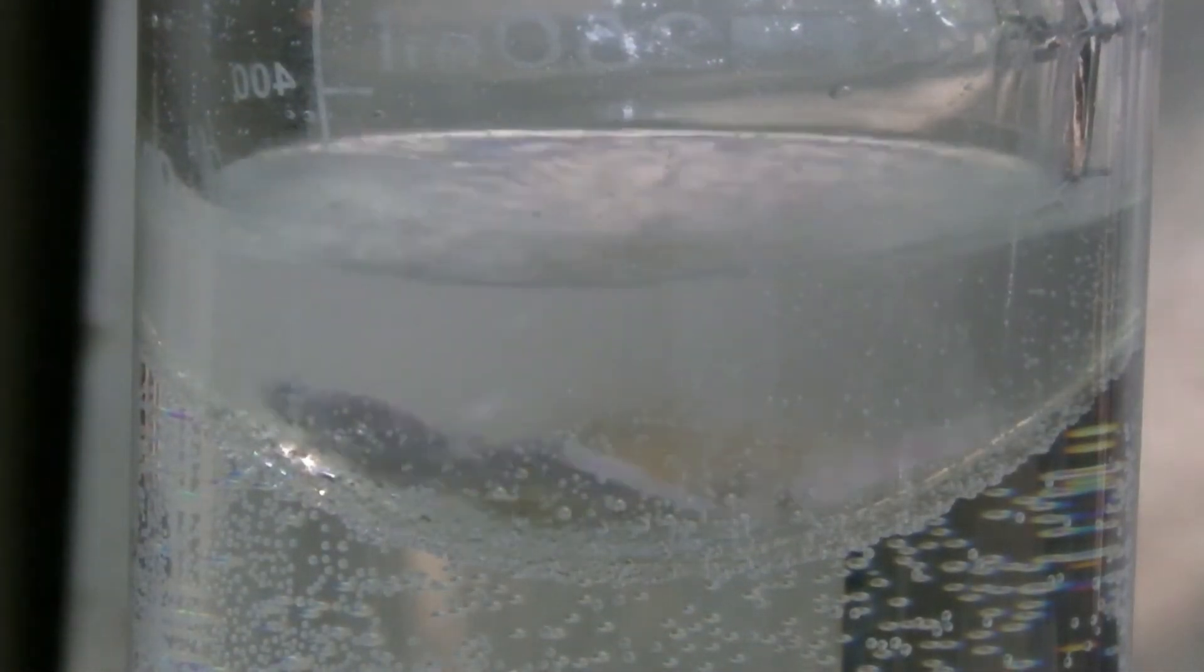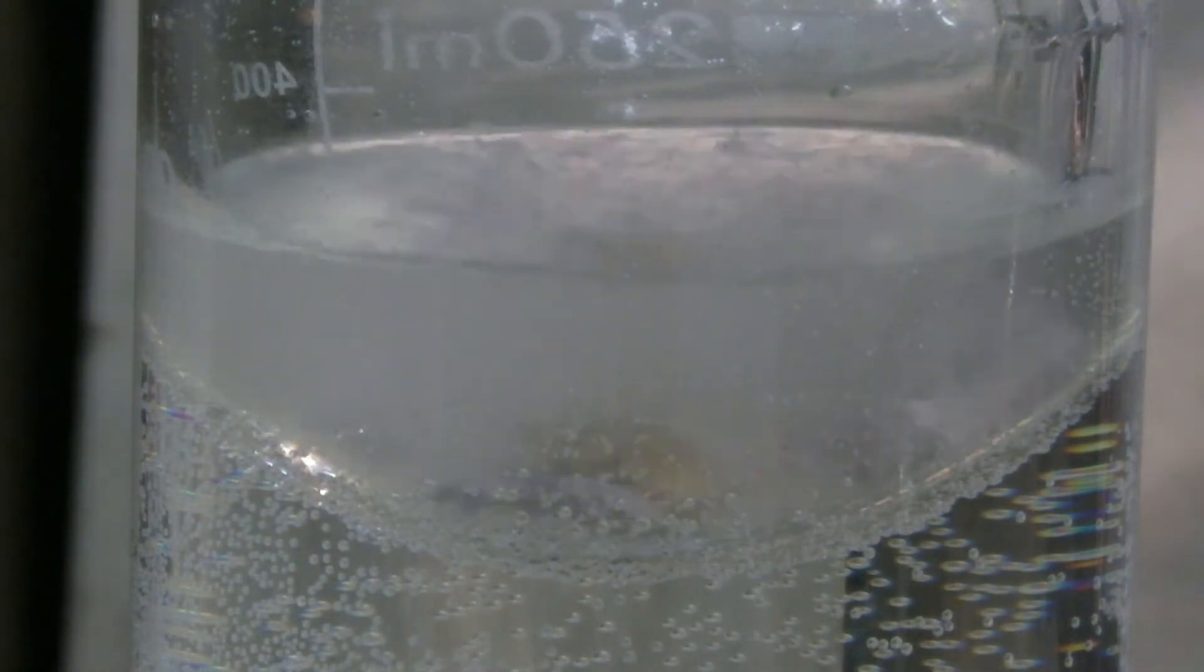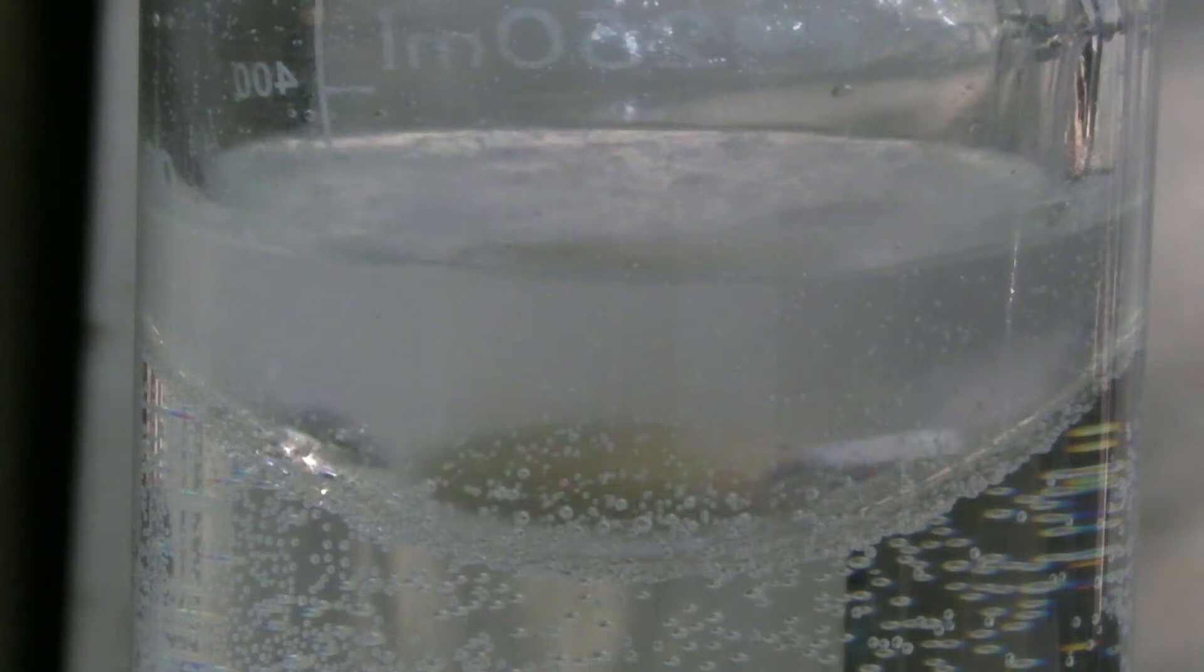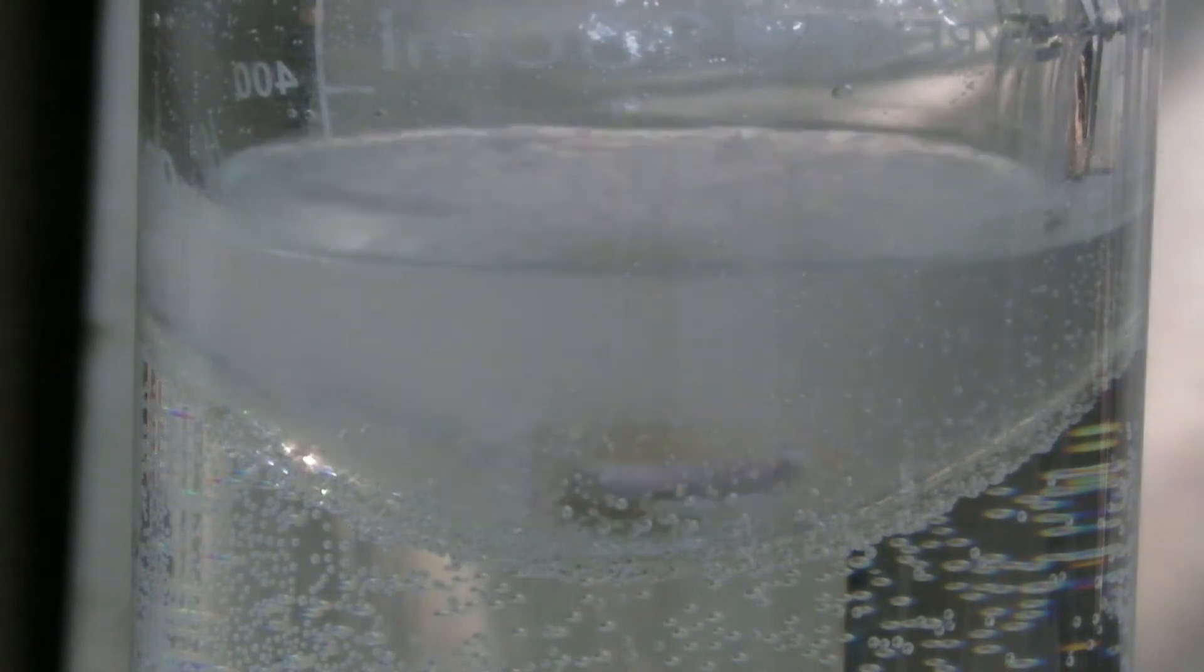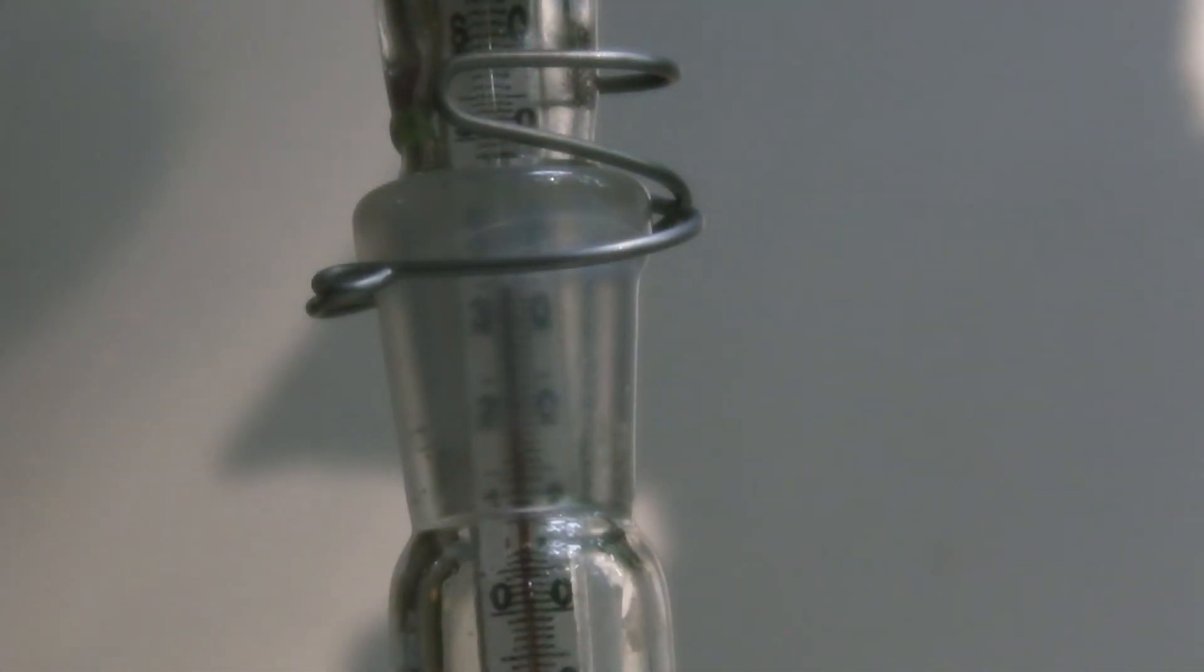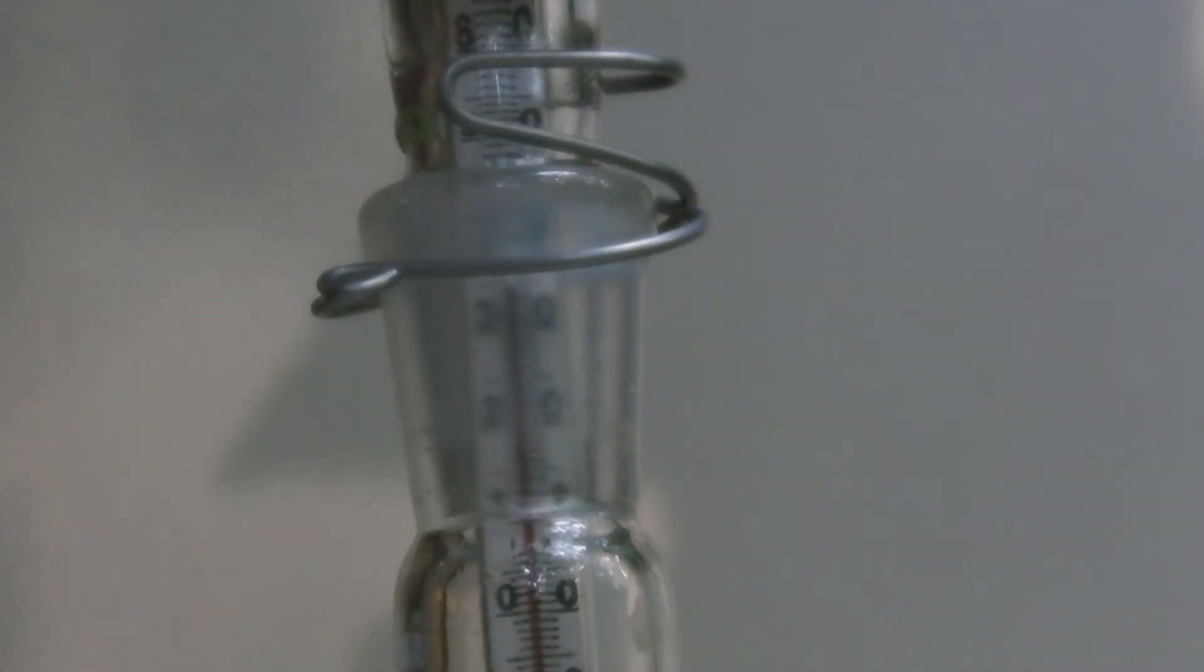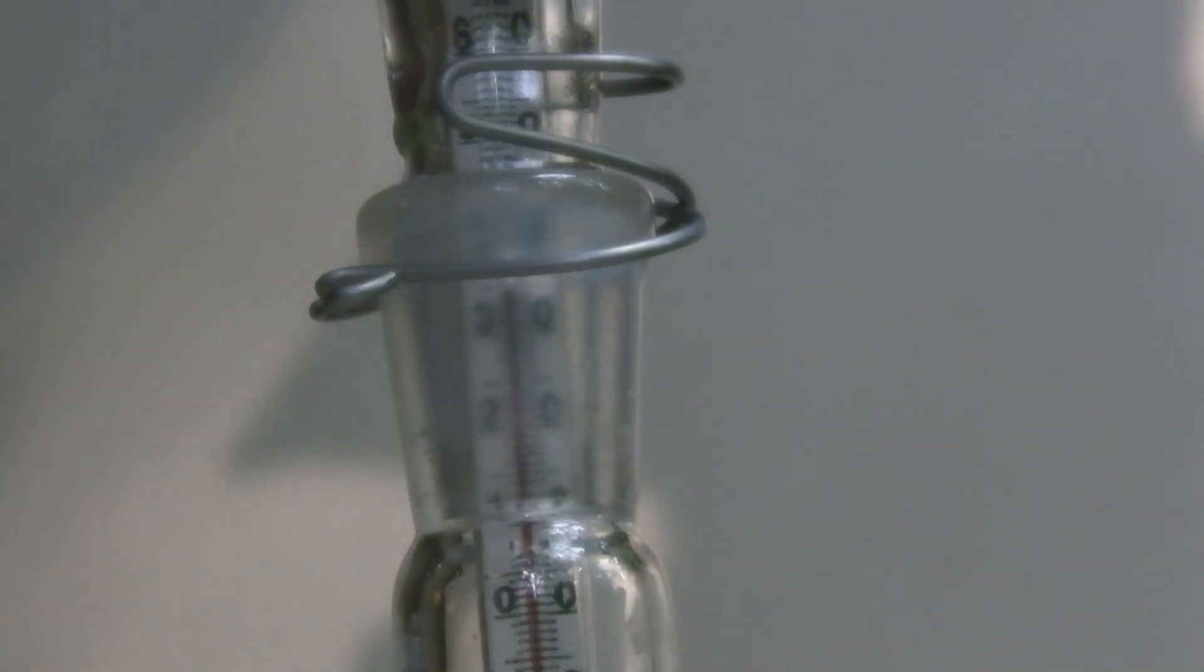The ether becomes cloudy due to the insoluble sodium hydroxide. The formation of hydrogen was so low that no pressure equalization could be noticed in the gas washing flask. The bubbles are formed because of the boiling ether. The measured boiling point was between 34 and 35 degrees C, which is exactly the boiling point of diethyl ether.